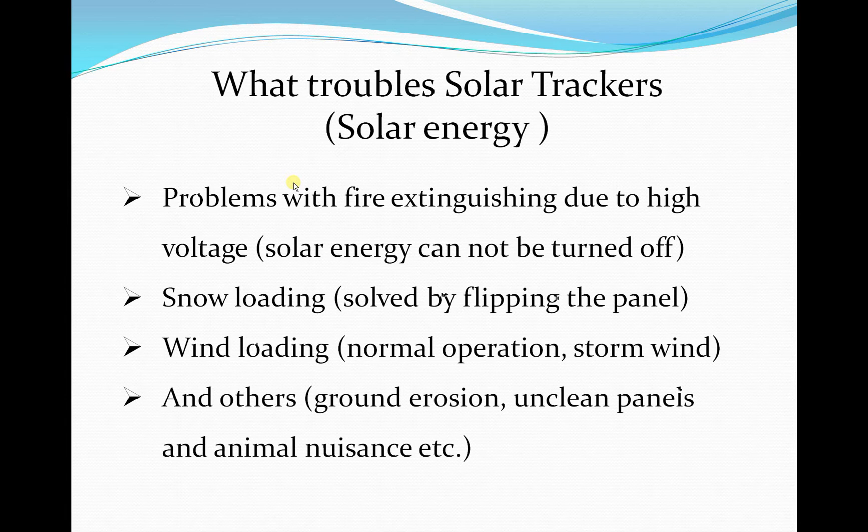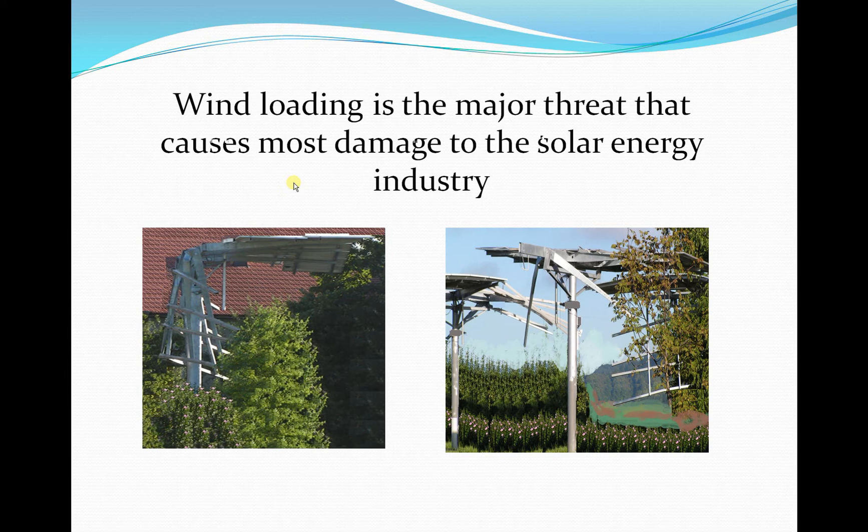What troubles the solar trackers? Due to high voltage there is fire, and snow loading — but that can be solved by easily flipping the solar panel. Wind loading, however, causes more damage to the solar panels. This picture, recently taken from Slovenia, shows a solar panel completely damaged because of high wind speed.